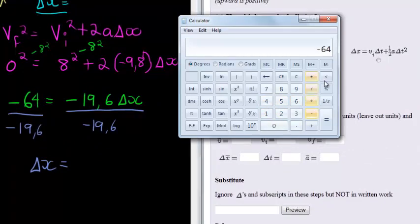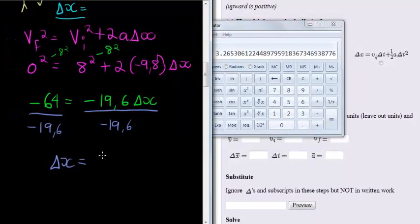64 negative divided by 19.6 negative gives me 3.265, so I'm going to make it 3.27 since we're rounding to two decimal places. 3.27 meters, that is how high it will rise.